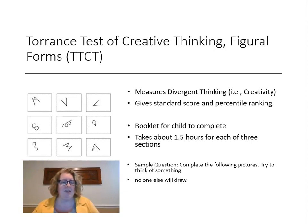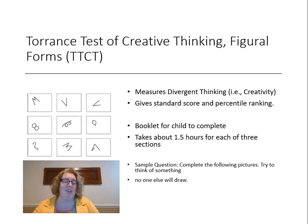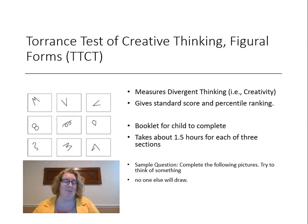Here's a sample question from the Torrance test: students are shown a series of lines and little boxes and asked to complete pictures, trying to think of something no one else will draw. Each student has about a half hour per section. For example, if you turn a V-shape into a Pac-Man, you won't score points because everyone thinks of that — but if you turn it into an elaborate alien from outer space with lots of elaboration and detail, you score many points. There are standardized scoring booklets, and each of three sections takes about a half hour to score.